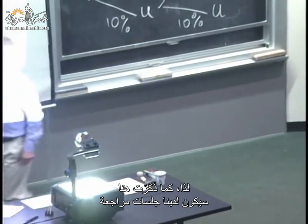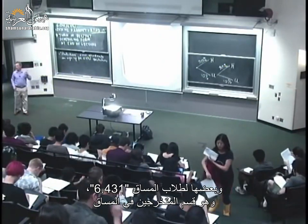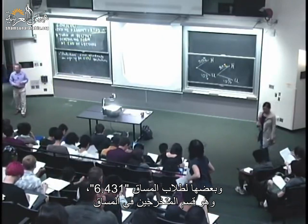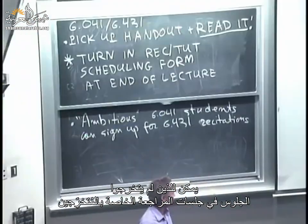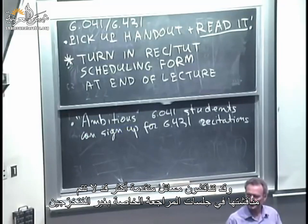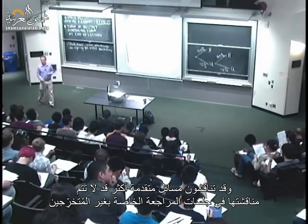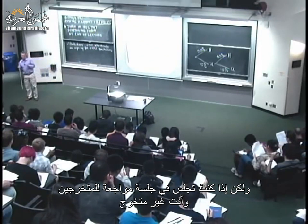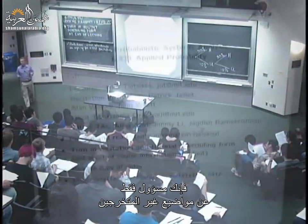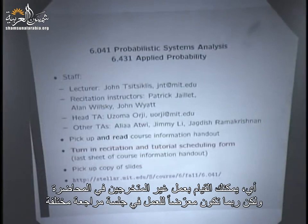We're going to have recitation sections — some of them are for 6.041 students, some are for 6.431 students, the graduate section of the class. Undergraduates can sit in the graduate recitation sections. Things may be a little faster there, covering more advanced problems not covered in undergrad sections. But if you sit in the graduate section, you're still only responsible for the undergraduate material — you can just do the undergraduate work in the class.